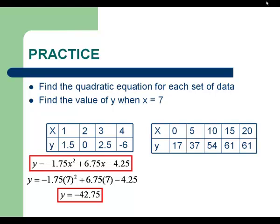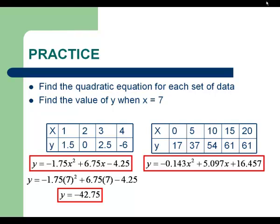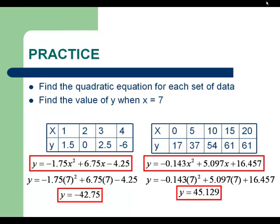On the second equation, round to like three decimal places. Negative 0.143x squared plus 5.097x plus 16.457. Now we're plugging in 7 as x and evaluating this in our calculator. You should get a final answer of about 45.129 if you round to three decimal places.